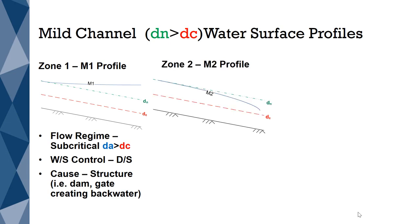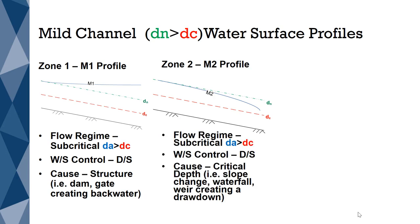An M2 profile is formed in Zone 2, when the flow regime is subcritical. A subcritical flow condition occurs when the actual depth is greater than the critical depth. Flows that are subcritical are always controlled downstream. For an M2 profile to occur, there needs to be critical depth control at the downstream location. This will occur when there is a slope change or a waterfall.